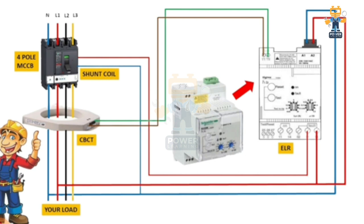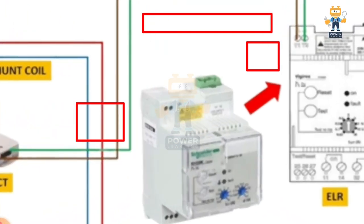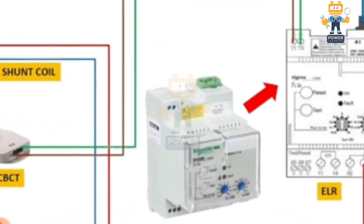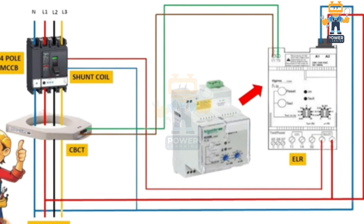Here you can see this brown and green wire — we are taking these from the CBCT and connecting them to our earth leakage relay at terminals T1 and T2. This is the simple connection of the CBCT with the earth leakage relay.